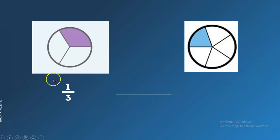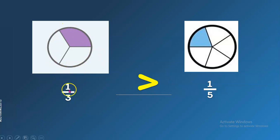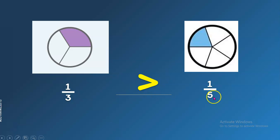Now again, we have these fractions: one-third compared with one-fifth. And what symbol should we use? Good job — it's greater than. Because when we talk about fractions, we look at the denominator. The smaller the denominator, the bigger the fraction is. That's why one-third is greater than one-fifth.